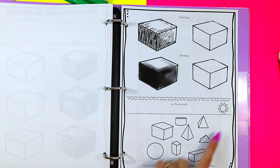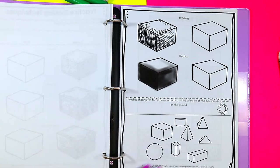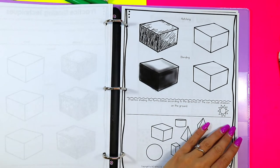Again, the light source is over here. So thinking about how the light is hitting the shapes and then how the shadows are going to be cast on them.